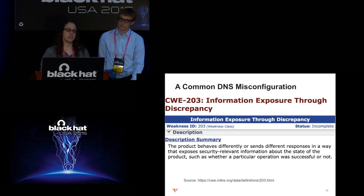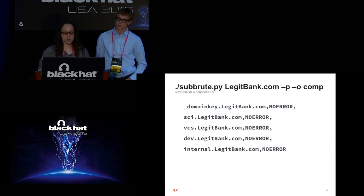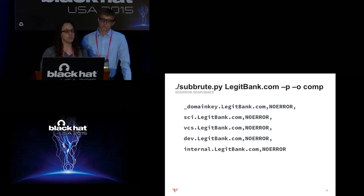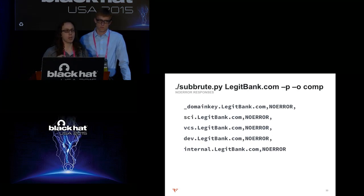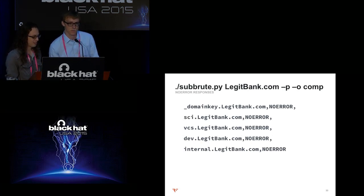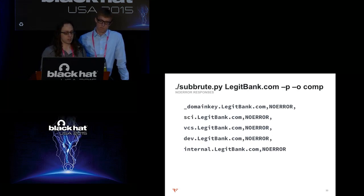There are also common DNS misconfigurations. CWE-203 is information disclosure through discrepancy — the catch-all for side-channel attacks, and DNS can suffer from these too. SubRoot first looks up a domain it knows doesn't exist — a UUID as a subdomain — and records the response, typically NXDOMAIN. As it enumerates other records, if it receives a different response, something is going on. For example, querying _domainkey.legitbank.com and getting no error instead of NXDOMAIN means something suspicious is present. Targets like _domainkey, internal, and dev may be interesting. SubRoot takes its output files as input, and in a greppable format you can grep for 'no error' entries and re-run SubRoot on those strange records.